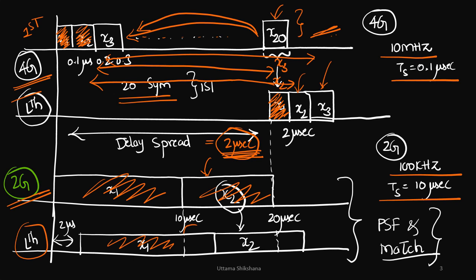So definitely at symbol X2, what is the overlap? Only a small portion of overlap is there which is worth of 2 microseconds. So this much interference is very small and this can be easily eliminated by designing the good pulse shaping and matched filters.